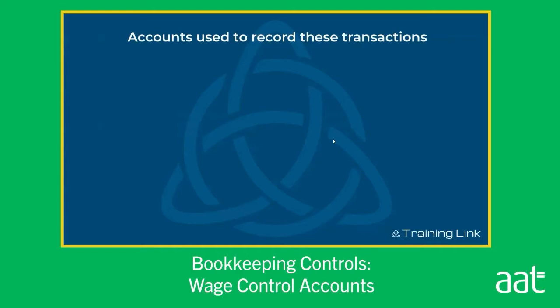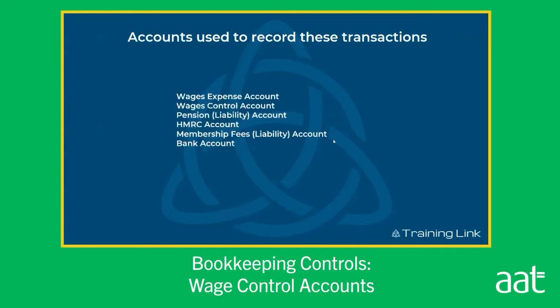So let's look at the accounts we're going to use to record these transactions. We're going to use the wages expense account, the wages control account, the pensions liability account, the HMRC account, the membership fees account, and a bank account. You'll notice on two of them I've put the word 'liability' in their title. Being able to identify whether an account is an asset, liability, income, or expense really helps your thought processes. So make sure when you look at an account, you're thinking about what type of account it is.